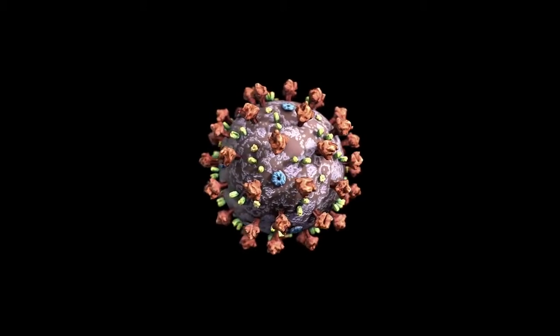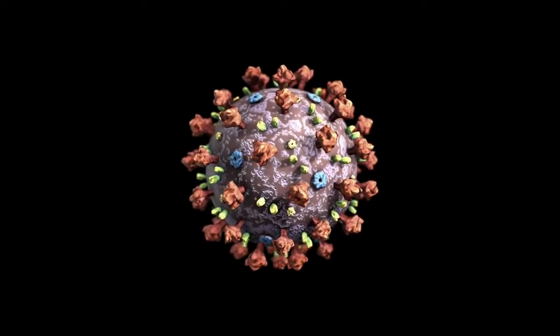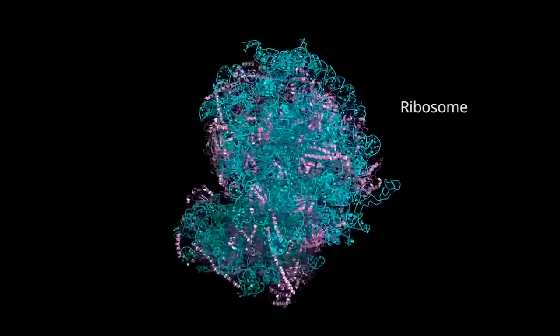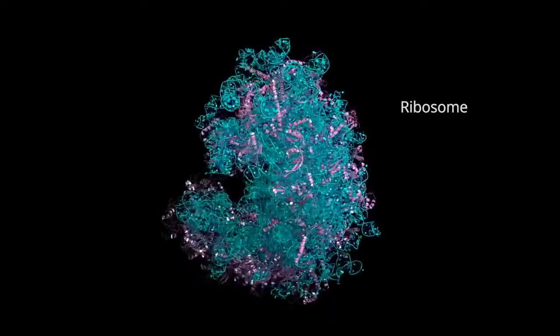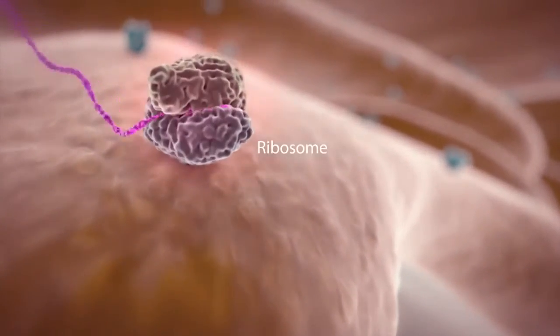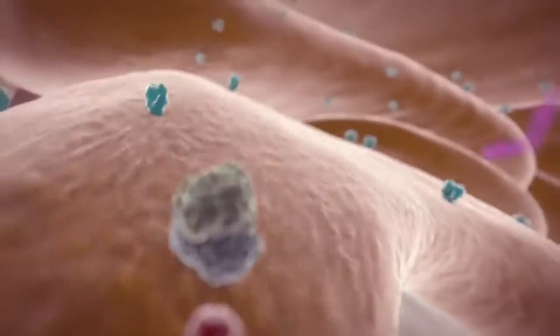The coronavirus, on the other hand, doesn't need to enter the host cell nucleus. It can directly access parts of the host cell called ribosomes. Ribosomes use genetic information from the virus to make viral proteins, such as the spikes on the virus's surface.